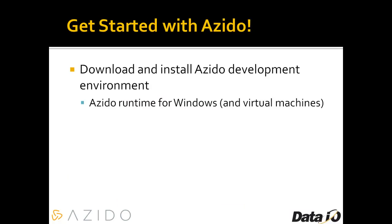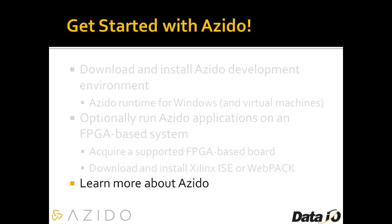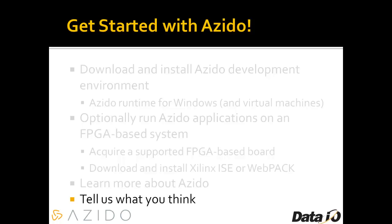If you'd like to learn more about Azito, I recommend downloading and installing the Azito development environment. It runs on various versions of Windows, both 32 and 64-bit, or you can run it on virtual machines in a different environment such as Linux. If you want to try Azito on an FPGA-based system, you'll need one of the supported FPGA-based boards listed on the website, and either an existing XionLynx installation or XionLynx ISE or Webpack — the Webpack software is free from XionLynx by registering. You can learn more and provide feedback on the DataIO Azito website, and share your applications on the Azito Marketplace. Thanks for spending a few minutes to learn about DataIO Azito.